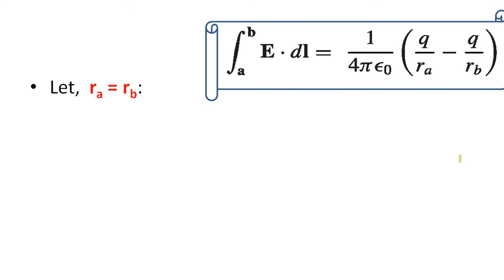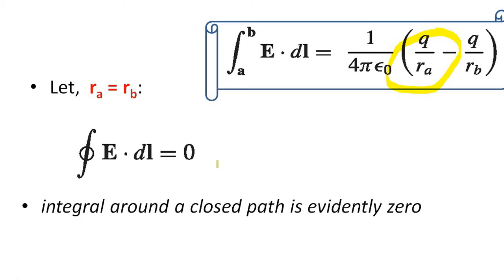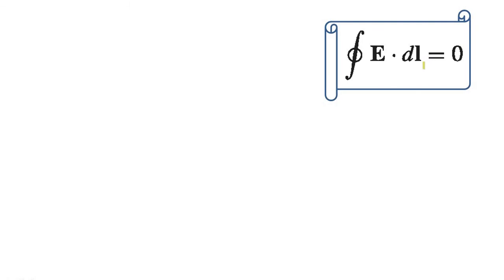Let Ra equal to Rb. When Ra equal to Rb in this equation this term will be zero. So we can write closed integral E dot dL equal to zero, or in general integral around a closed path is evidently zero. Now this is the equation.